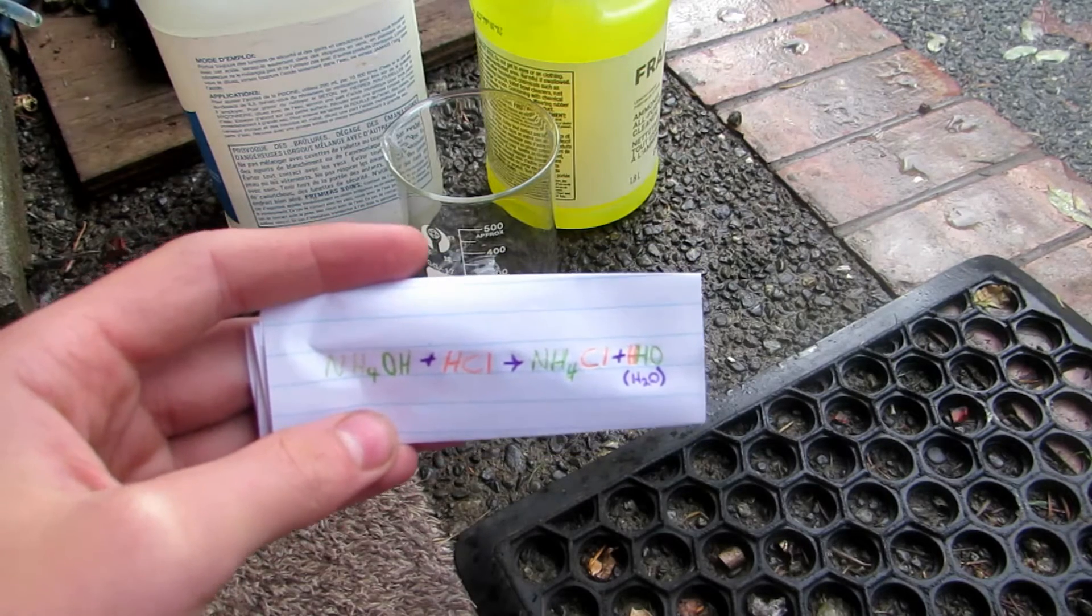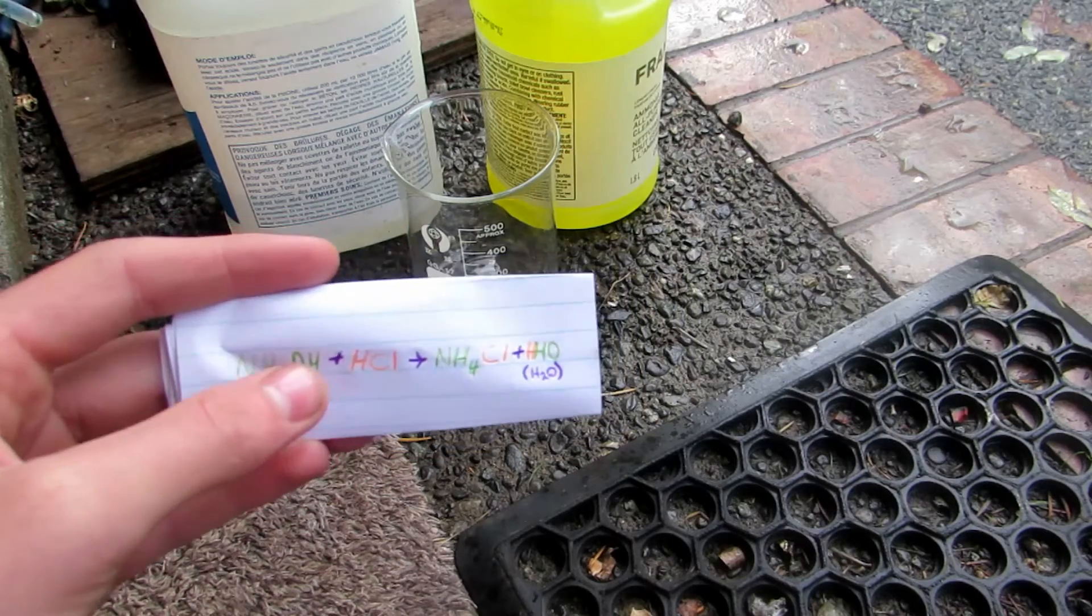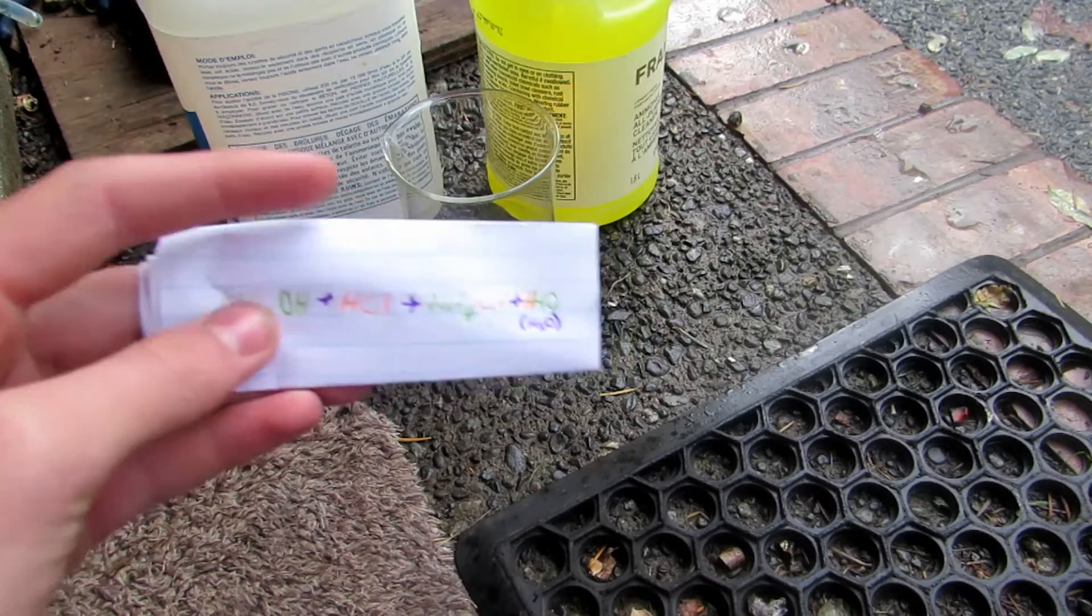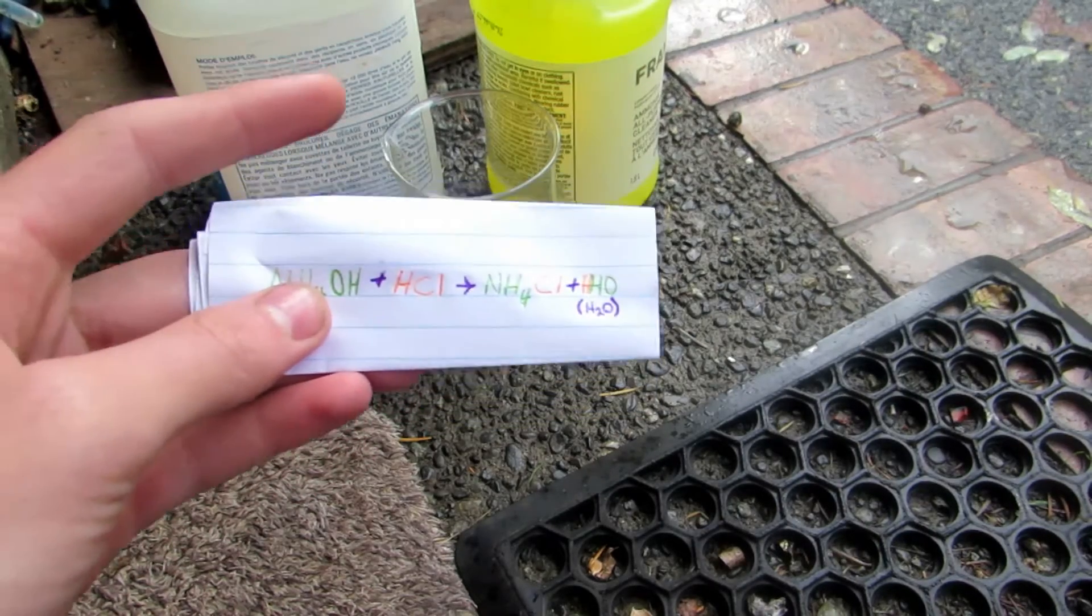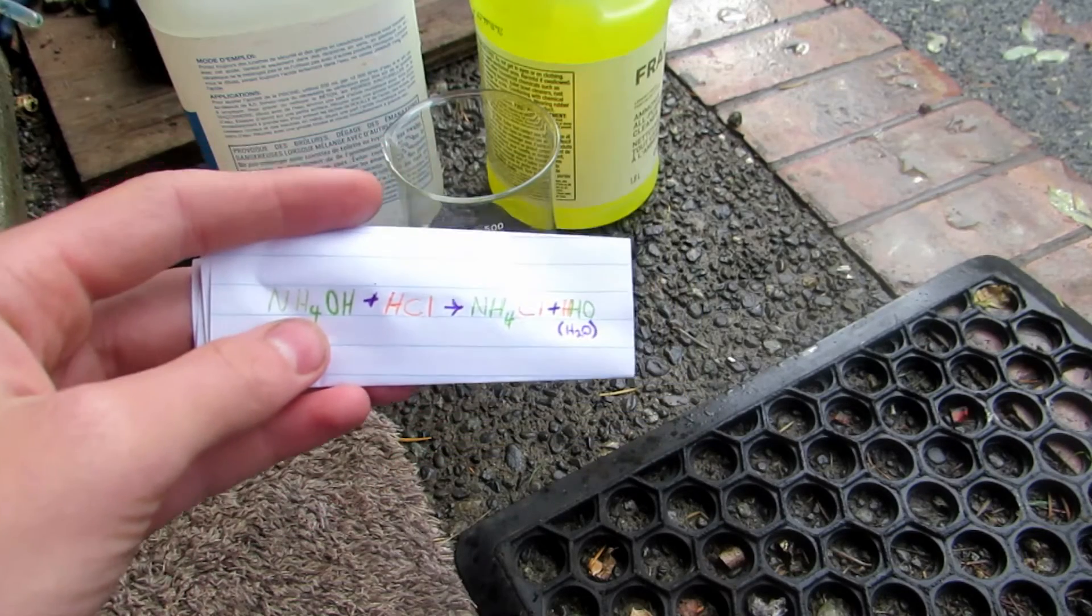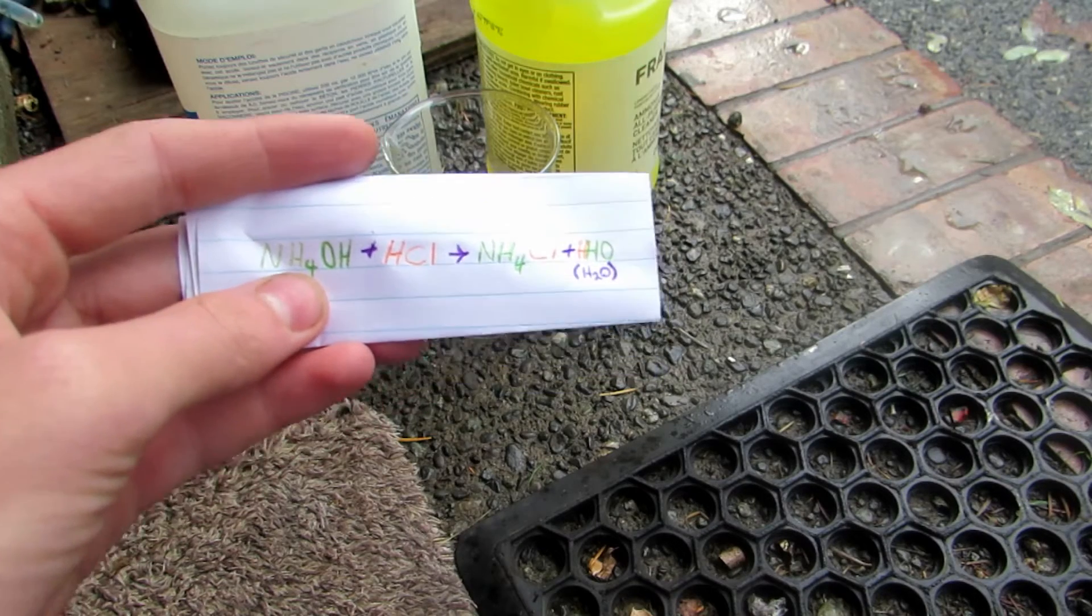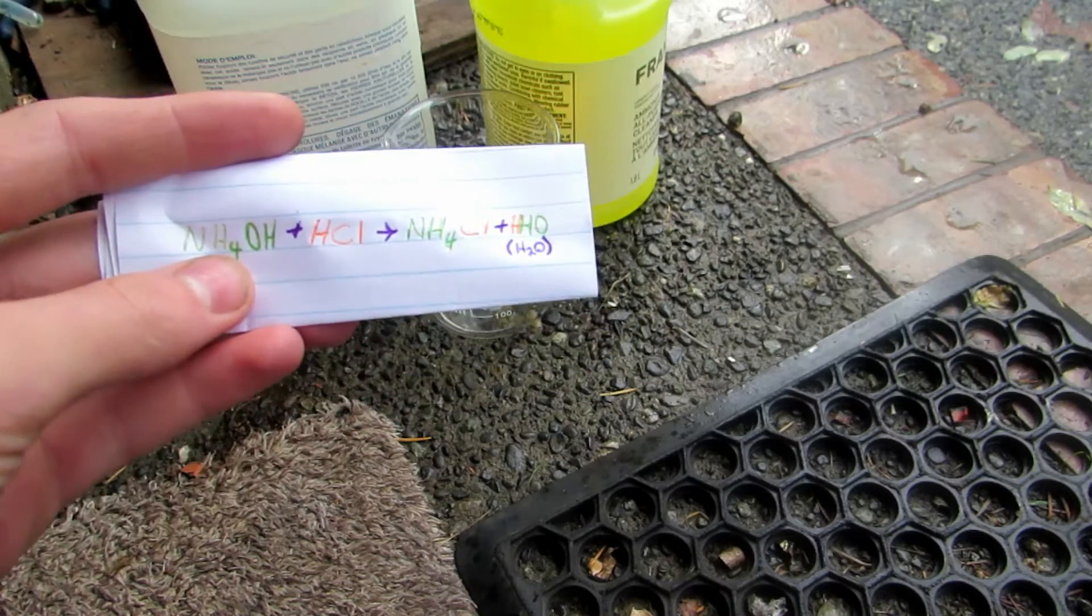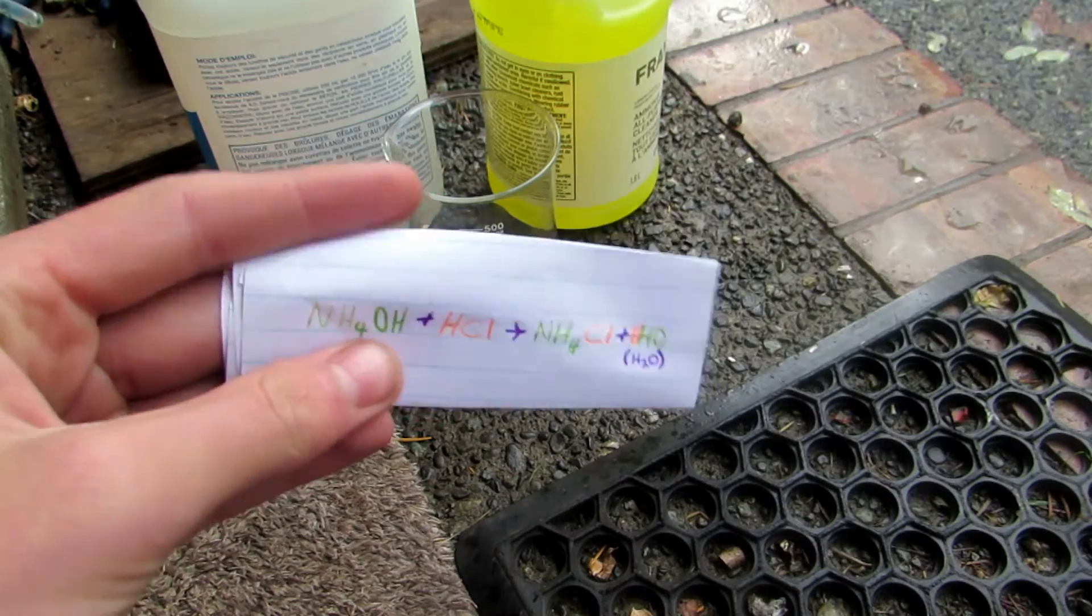Hey guys and welcome back to another video. Today we will be making ammonium chloride. Ammonium chloride for our uses is mainly going to be used as a source of ammonia gas if we ever need it. I'm also going to be reacting it with sodium nitrate to form nitrous oxide or dinitrogen monoxide, which is essentially laughing gas. However, this is going to be for the reaction of the barking dog.